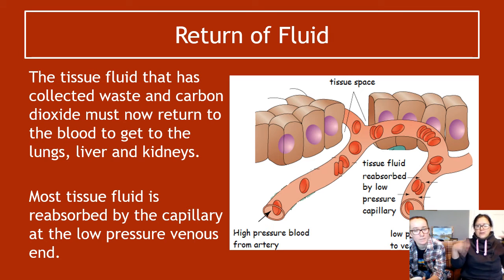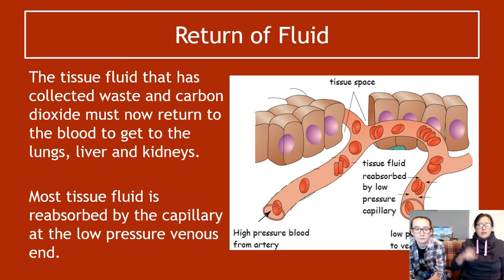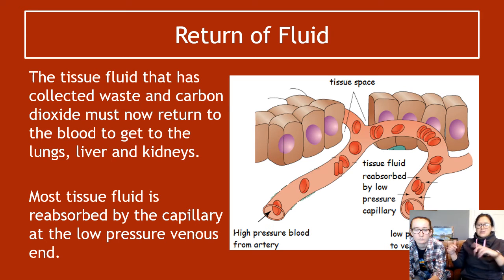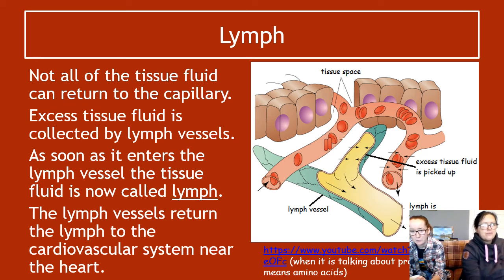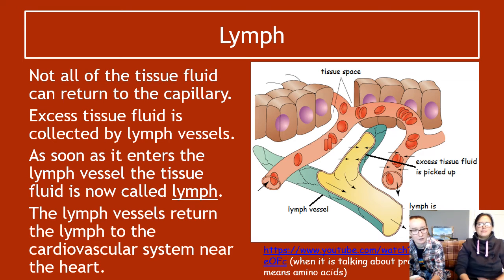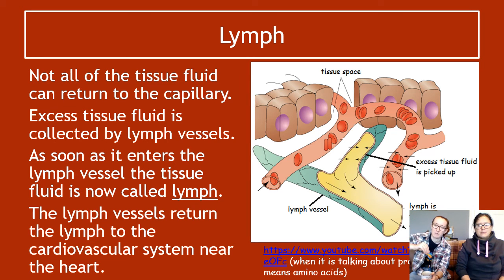We need the tissue fluid to get back into the capillary, otherwise our tissues would swell up. The tissue fluid that has collected waste and carbon dioxide must return to the blood to reach the lungs for CO₂ removal, the liver to break down waste products, and the kidney to excrete them. Most tissue fluid can be reabsorbed at the low pressure venous end of the capillary. Any excess tissue fluid that doesn't make it back is collected by a lymph vessel — as soon as it enters the lymph vessel, it is now called lymph.